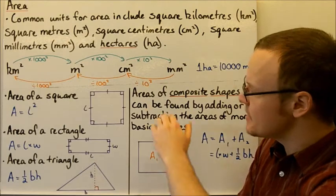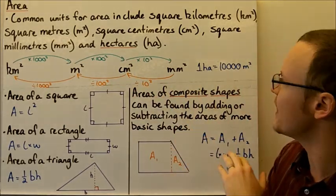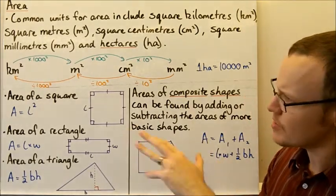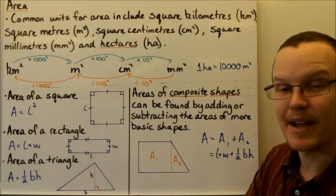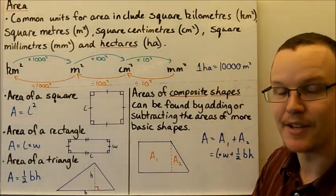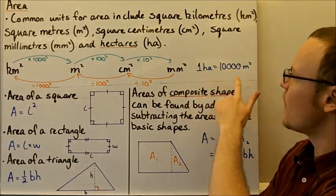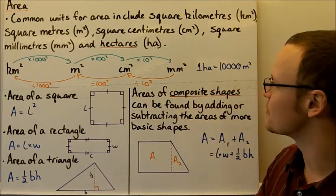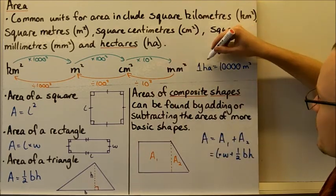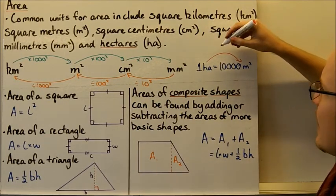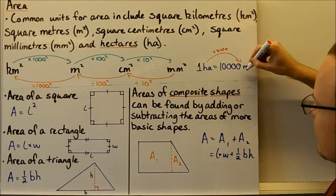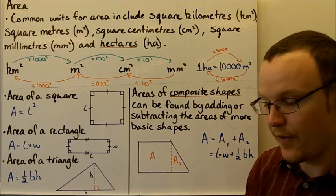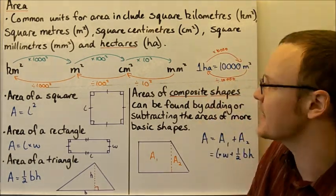We've also got a conversion from hectares to these other units. One hectare is equal to 10,000 square metres. So if I've got 10,000 square metres, that's the same as one hectare. To convert five hectares to square metres, multiply by 10,000 to get 50,000 square metres. Going the other way, 5,000 square metres divided by 10,000 gives half a hectare. So: hectares to square metres — multiply by 10,000; square metres to hectares — divide by 10,000.